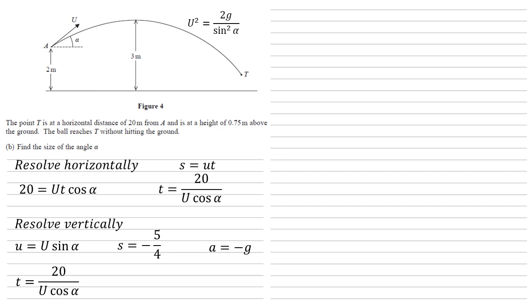We need a formula with U, S, A and T in it, which means S equals U T plus a half A T squared. Putting those values in gives us minus 5 over 4 equals 20 U sine alpha over U cos alpha minus a half G times 20 over U cos alpha all squared.